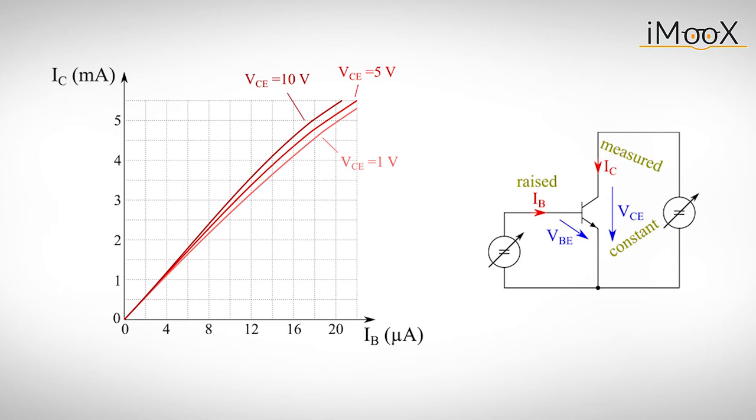This function varies quite a lot with different values of VCE. To keep it easy, we will not go into detail at this point. Just keep in mind that the output current does not always change linearly with the input current, especially when the input current is very small or very high.